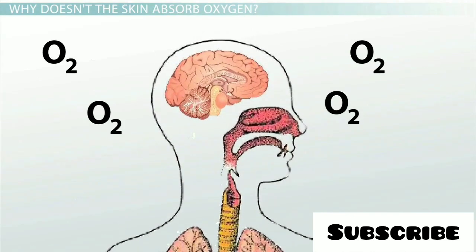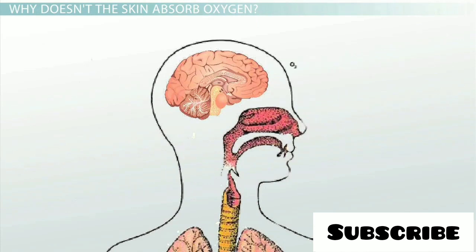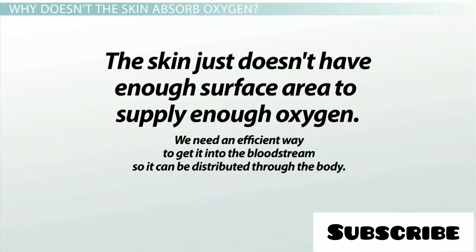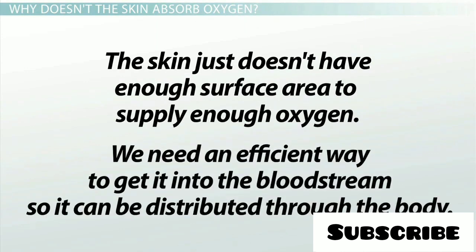The problem is, if we just absorbed oxygen through our skin, it might reach the first two, maybe three layers of cells before it was all used up, and it would never make it all the way to our brain or muscles or most other places in our body. We just don't have enough surface area to supply enough oxygen, and we need an efficient way to get it into the bloodstream so that it can be distributed throughout the body.